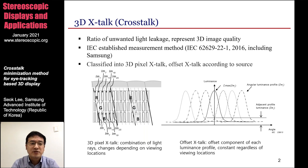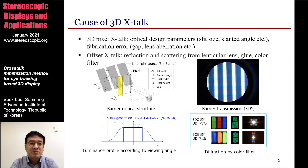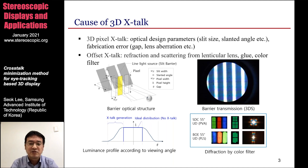The 3D pixel crosstalk is mainly determined by the shape of the luminous profile, and it is affected by the optical design parameters, such as the slit size and the slanted angles, and also by the fabrication errors. An offset crosstalk is caused by the refraction and scattering from the optical layer, glue, and color filter. You can see the example of the barrier transmission and the color filter diffraction in the figure. The upper figure shows the barrier transmission in the Nintendo 3DS, and the lower figure shows the diffraction by the color filter pattern.